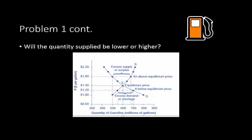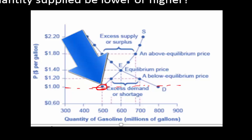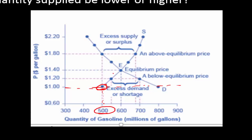The next question: will the quantity supplied be lower or higher? Looking at the supply curve, the quantity supplied at a dollar is right at 500. At equilibrium, quantity supplied and quantity demanded are equal — that's the definition of equilibrium, where everything comes together. We know from our demand situation that equilibrium was 600, so at a dollar supply is actually lower than equilibrium.